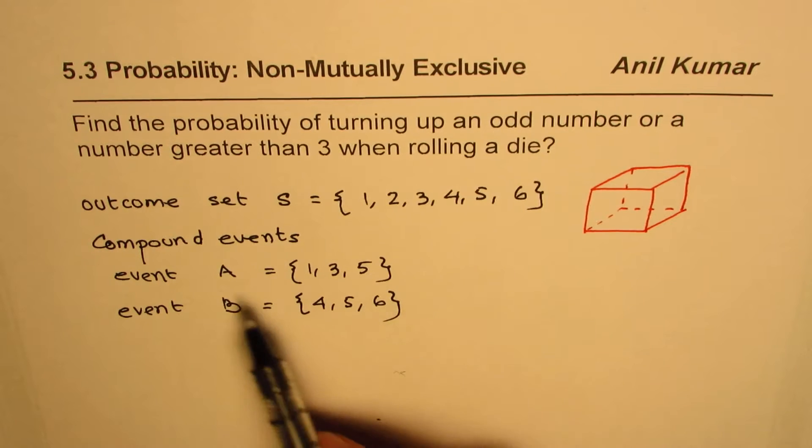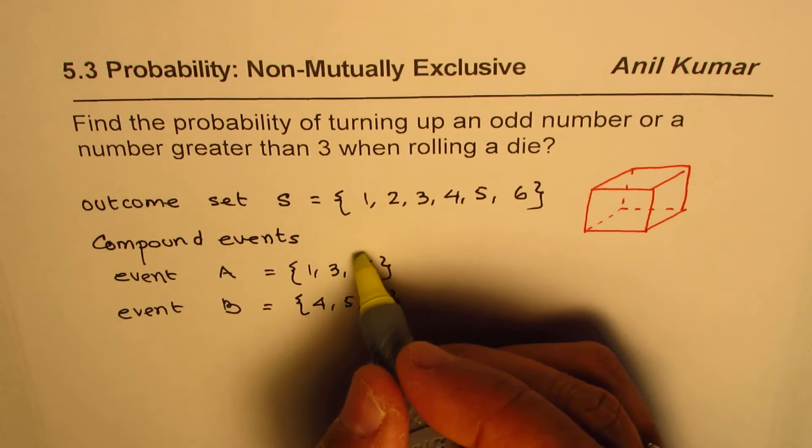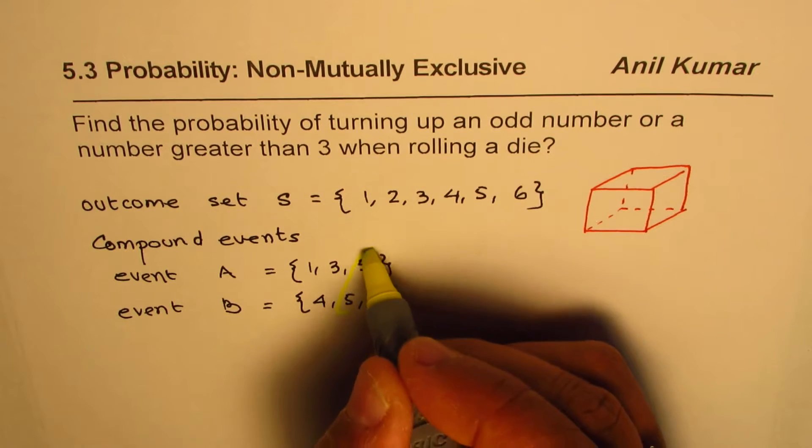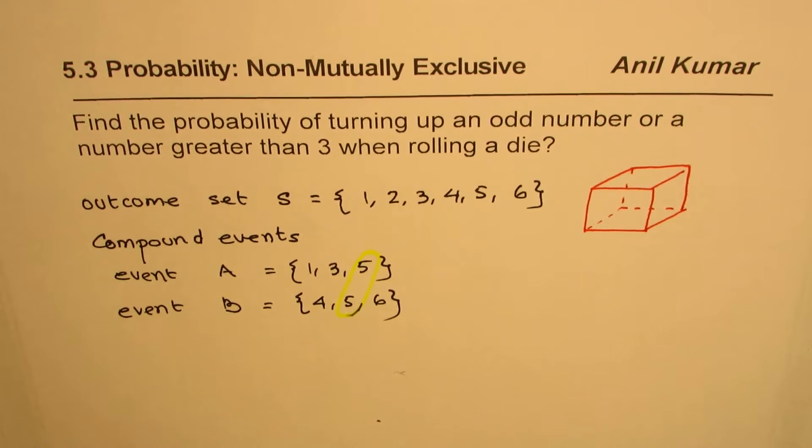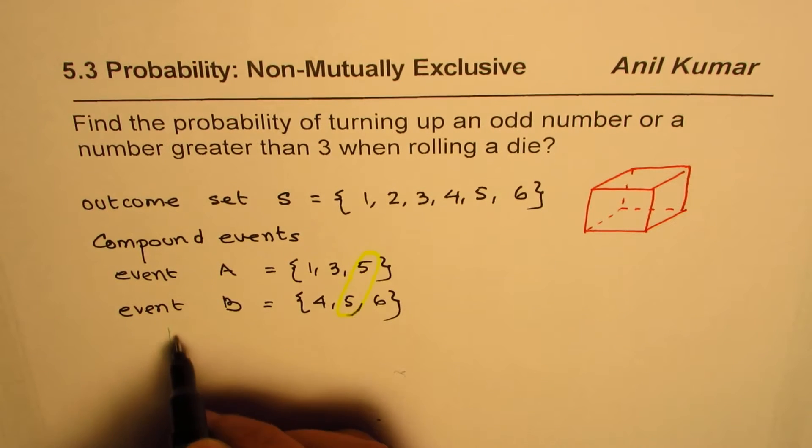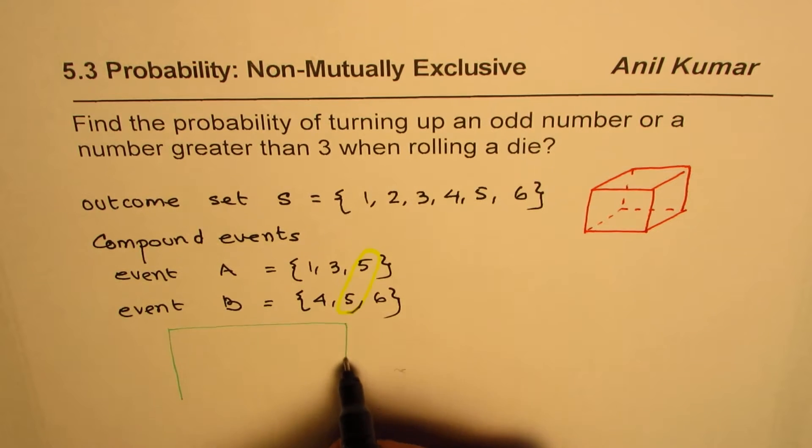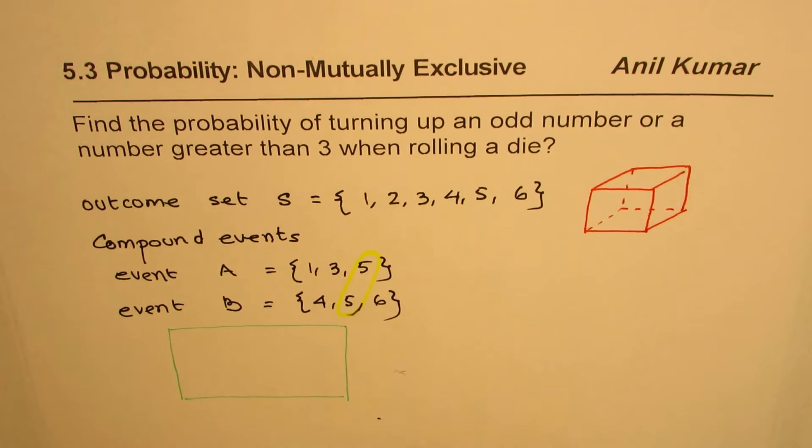Now if you observe between event A and B we have common elements, right? So we have common elements. This number 5 is common, right? So if you look into the sample set, basically, let me sketch here. I want to take time and discuss this with you.